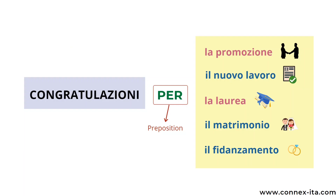You need the preposition PER to refer to the reason you are congratulating someone. For example: congratulazioni per la promozione (congratulations on your promotion), congratulazioni per il nuovo lavoro (congratulations on your new job), congratulazioni per la laurea (congratulations on your degree), congratulazioni per il matrimonio (congratulations on your wedding), congratulazioni per il fidanzamento (congratulations on your engagement).